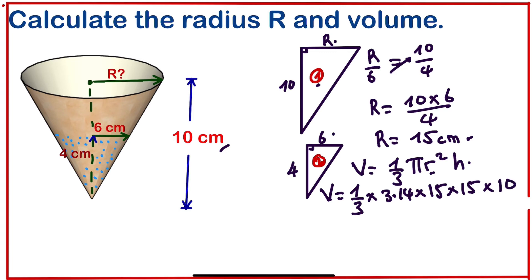We can simplify further. 3 divided by 15 is 5, so we are going to have the volume equals 3.14 times 5 times 15, which is 75. We just times 10, we just add 0. V equals 3.14 times 750, which will give us 2,355 centimeters cubed.